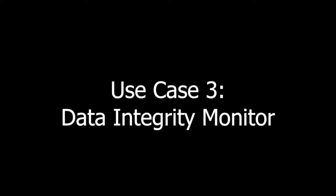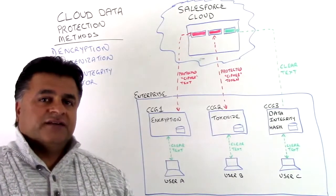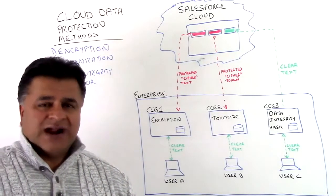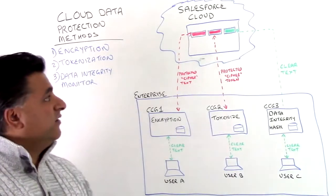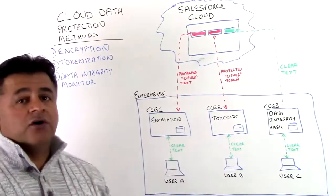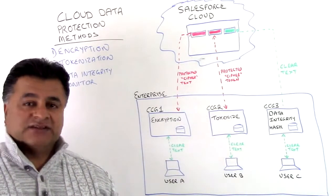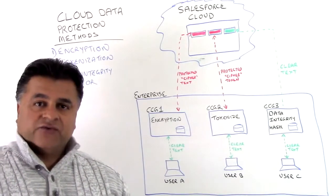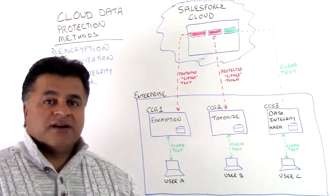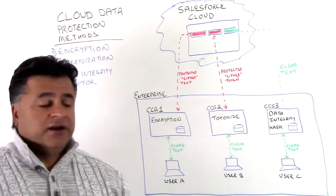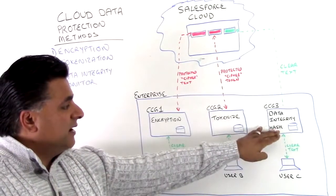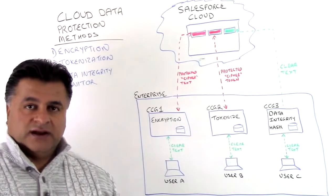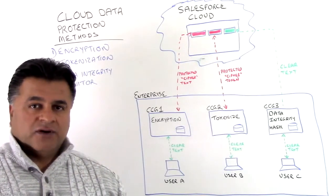The third method is the data integrity monitor, where we use a hash. The use case here is for global enterprises that want to keep an accounting or record of who modified the actual data, rather than protecting the data itself. If you change a value from one to two, they just want to know who modified it. For global manufacturers with employees from Europe, North America, and Asia changing records in real time, they want to keep an accounting of who modified each record and whether they were authorized to. This use case is ideal for those in automotive or pharmaceutical businesses doing manufacturing monitoring.